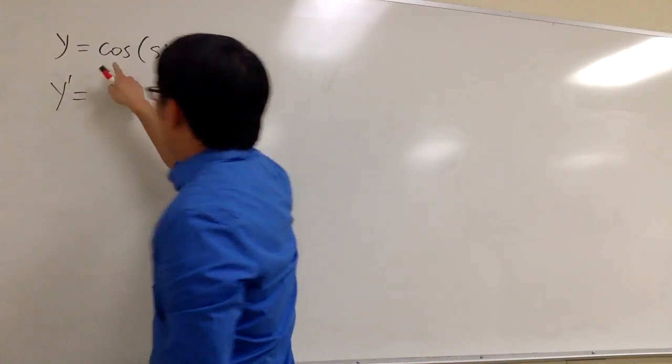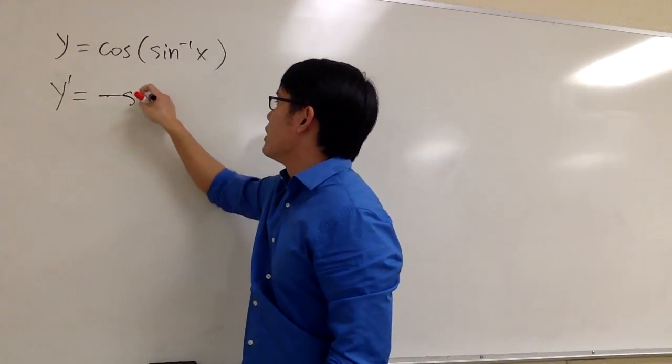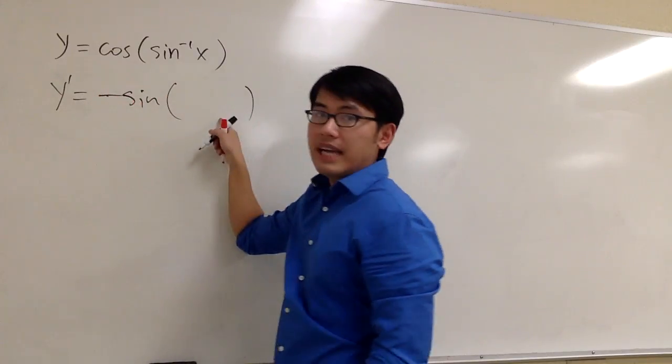First, let's write the y' and the derivative cosine of something. This is going to be negative sine of the same thing inside.